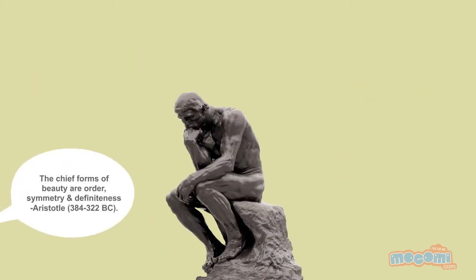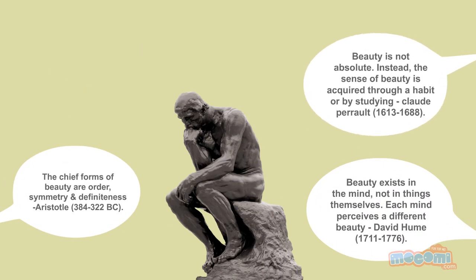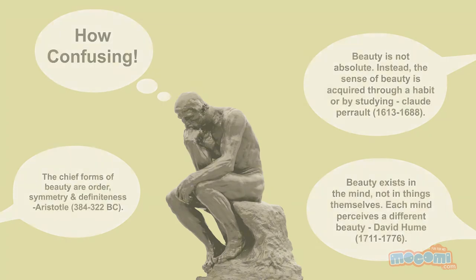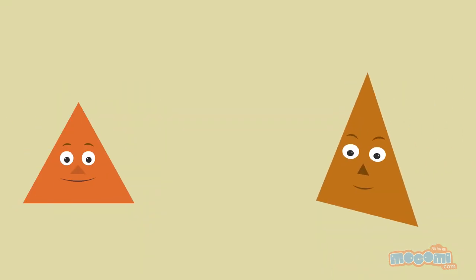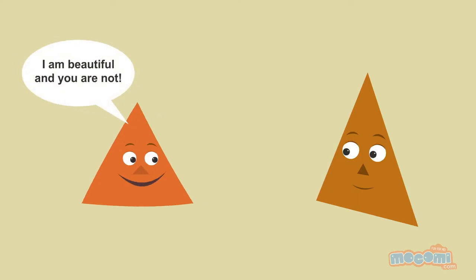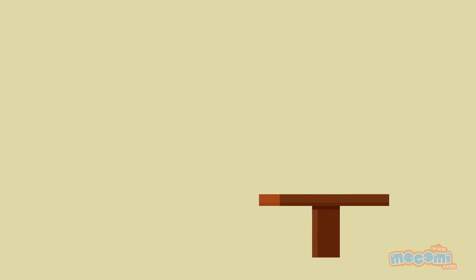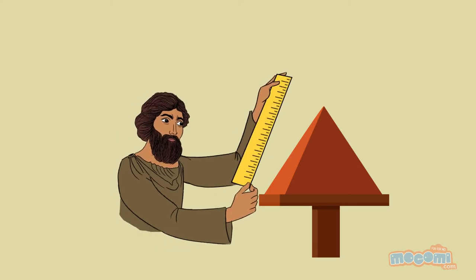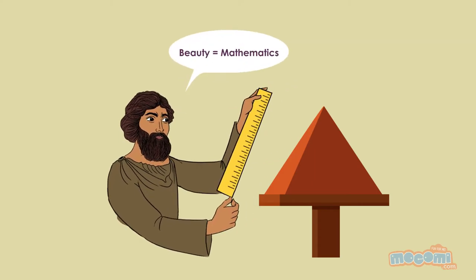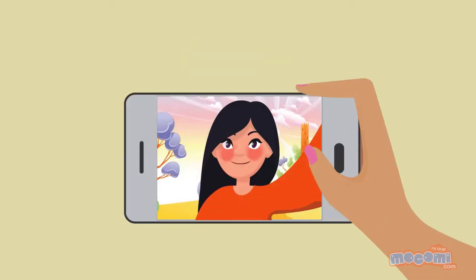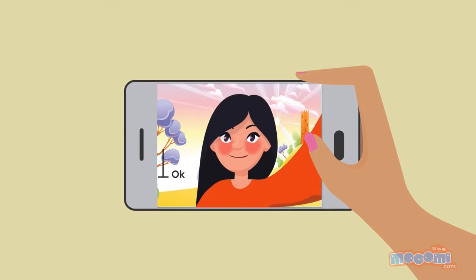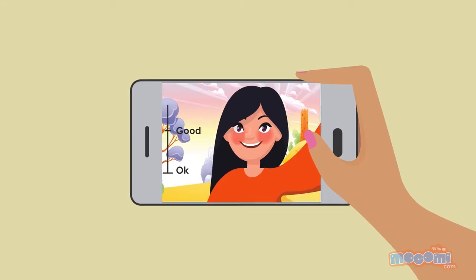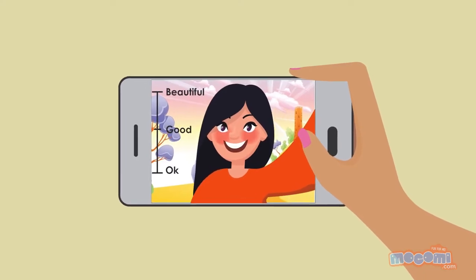The debate on what makes something or someone beautiful has been going on for centuries. This was the time when it was believed that proportionate and symmetrical objects were more attractive. The earliest Western theory of beauty can be found in the works of Greek philosopher Pythagoras, who saw a strong connection between mathematics and beauty. The definition is still held as relevant by many. So, in that manner, we can say that beauty can be measured.